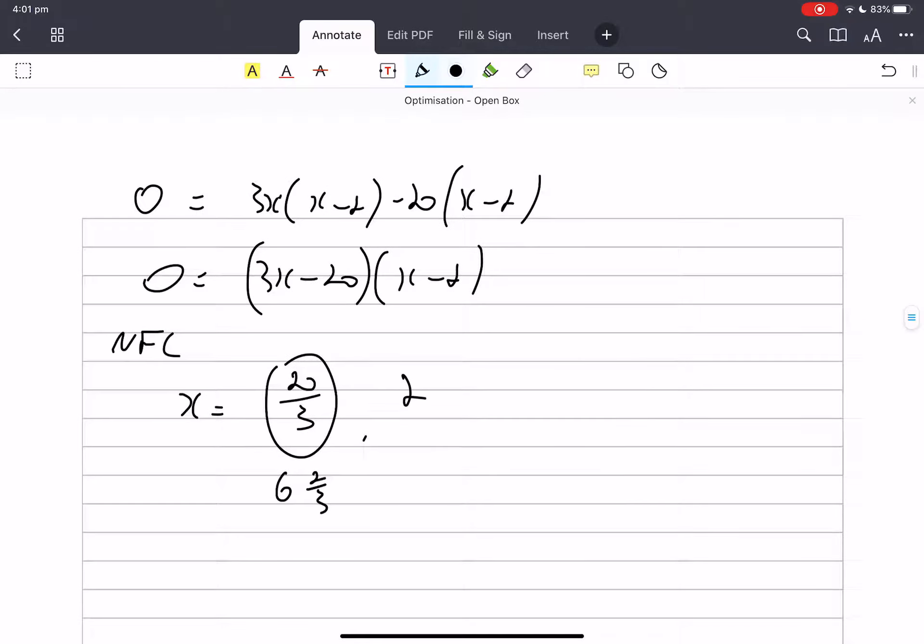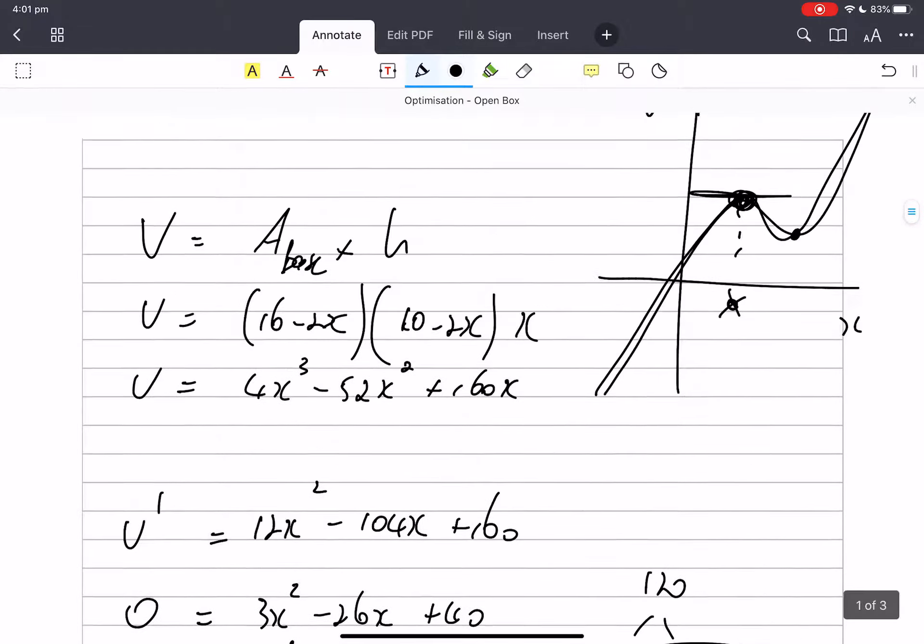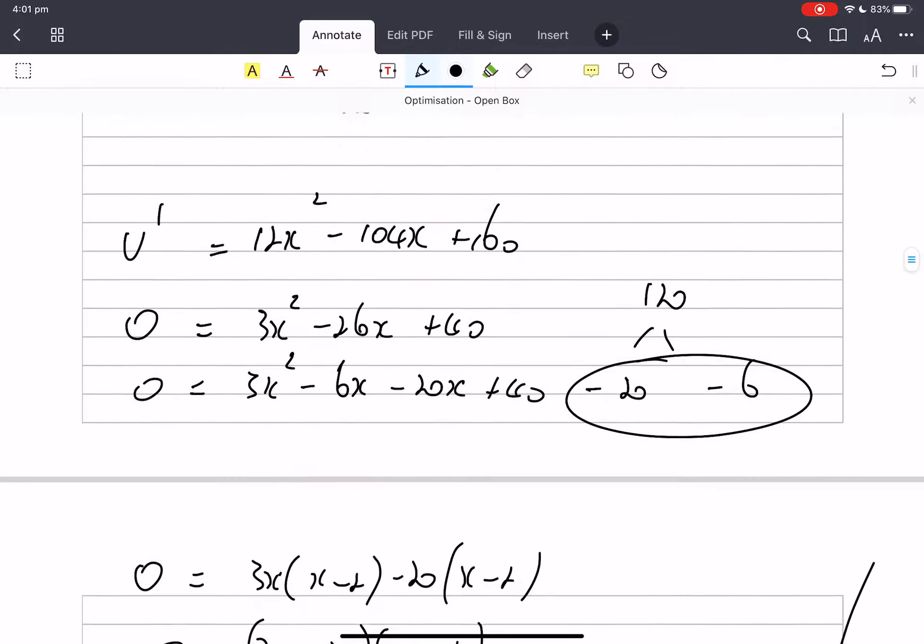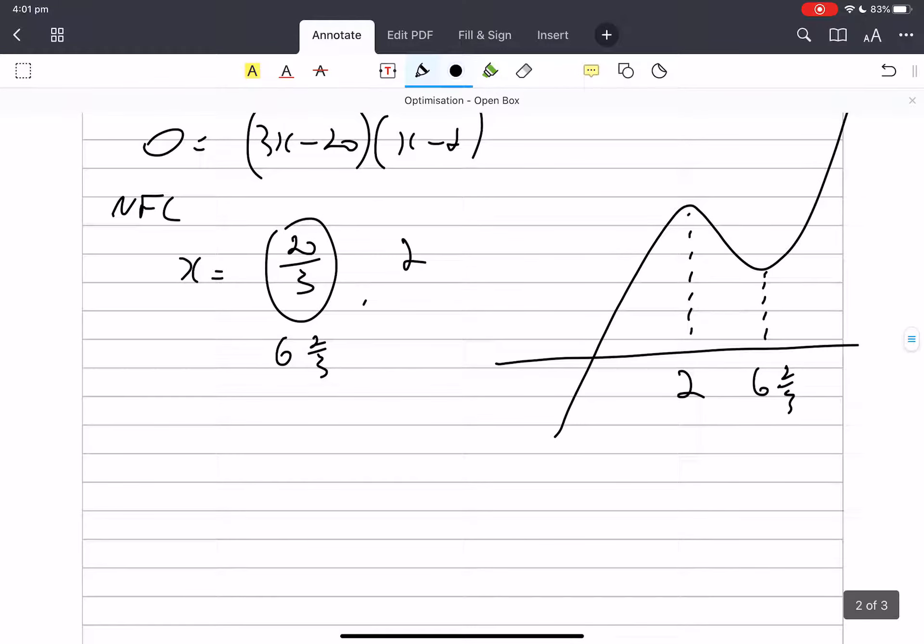See, this one here, that is 6 and 2/3. 6 times 3 is 18, yep, 6 and 2/3, and that's 2. So that marries in quite well with this. As well, you can see that the 2 comes first and this must be the 6 and 2/3. So let's just check what the question said. It said what is the largest volume.